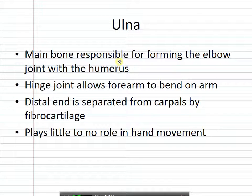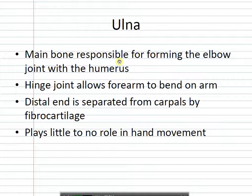The ulna is actually what contributes to the movement of the elbow, not the radius. The ulna has something that looks like an ice cream scoop on the end — the olecranon process. If you were to pull the radius completely off, you can see that the actual bone making the joint with the humerus would be the ulna — that's what does the pivoting back and forth. As it straightens out, the olecranon process goes into the olecranon fossa and locks into place. The ulna makes the biggest contribution to elbow movement.